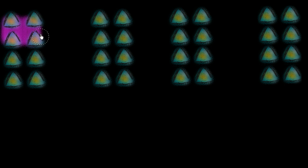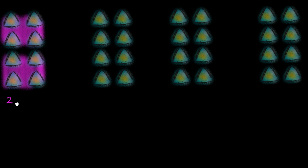If we have two groups, and in each group I have four — so that's one group of four, and here's my second group of four — we already know that we could write this as 2 times 4, which is the same thing as 4 plus 4. Notice I have two fours here. I have four plus another four, which is going to be equal to eight things either way.